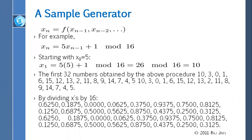A simple example: using the formula Xn = 5·Xn-1 + 1 mod 16, starting with X0 = 5. Five times 5 is 25, plus 1 is 26, mod 16 is 10. Then 10 times 5 is 50, plus 1 is 51, mod 16 is 3. You keep doing this and get the stream 10, 3, 0, 1, 6, 15, 12, and so on.